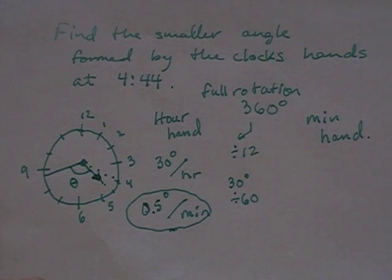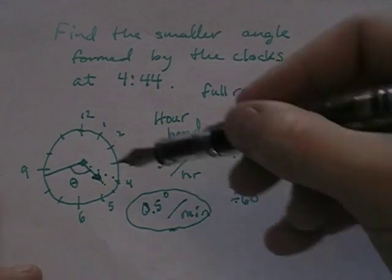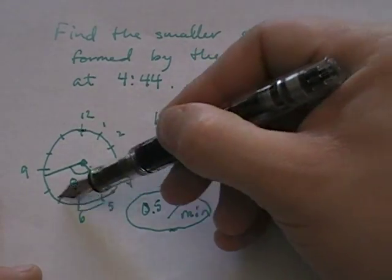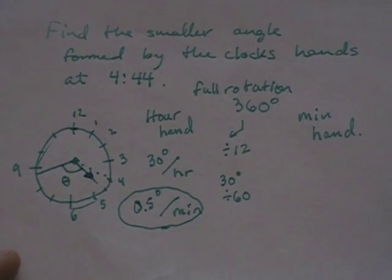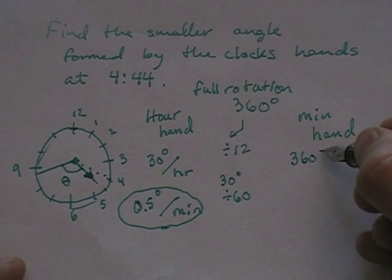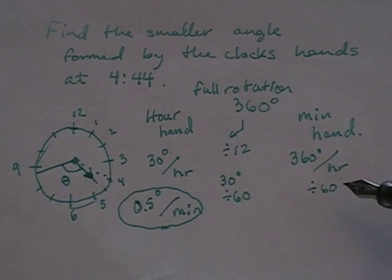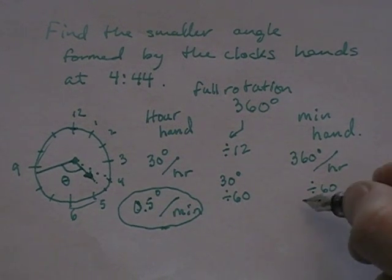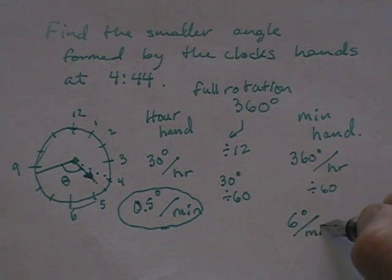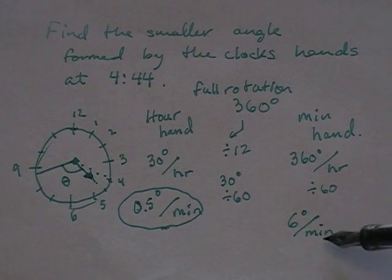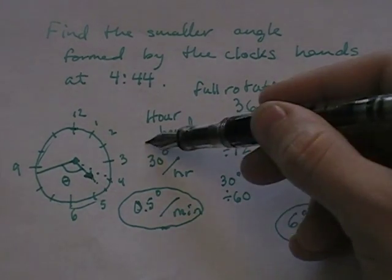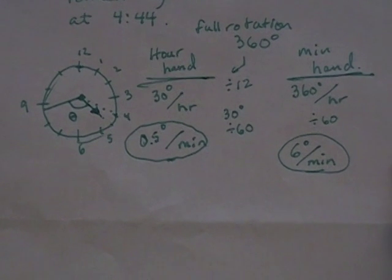Now for the minute hand: it goes from 12 all the way back to 12 every hour, so that's 360 degrees per hour. Divide 360 by 60 and we get 6 degrees per minute for the minute hand.